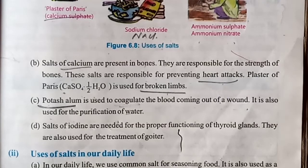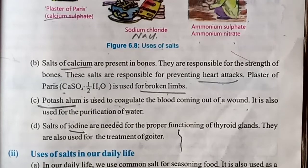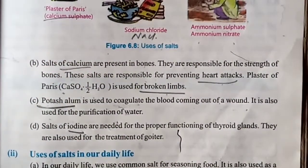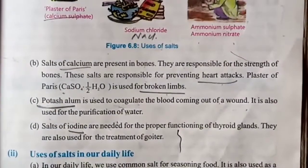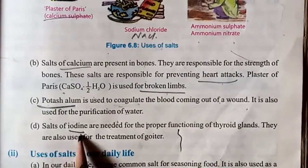Salt of iodine is needed for the proper functioning of the thyroid gland. Iodine salt is used because it helps the thyroid gland function properly. These salts are also used for the treatment of goiter. We also use salts of iodine for proper functioning of our body.